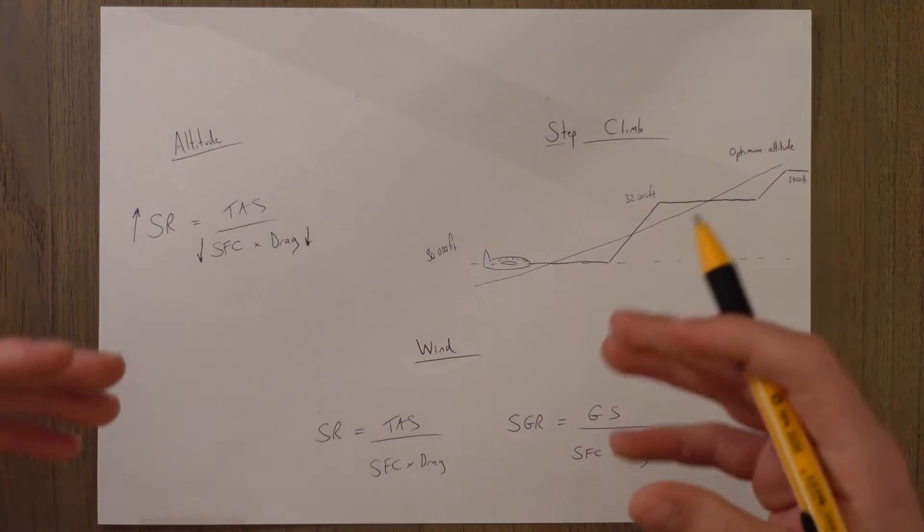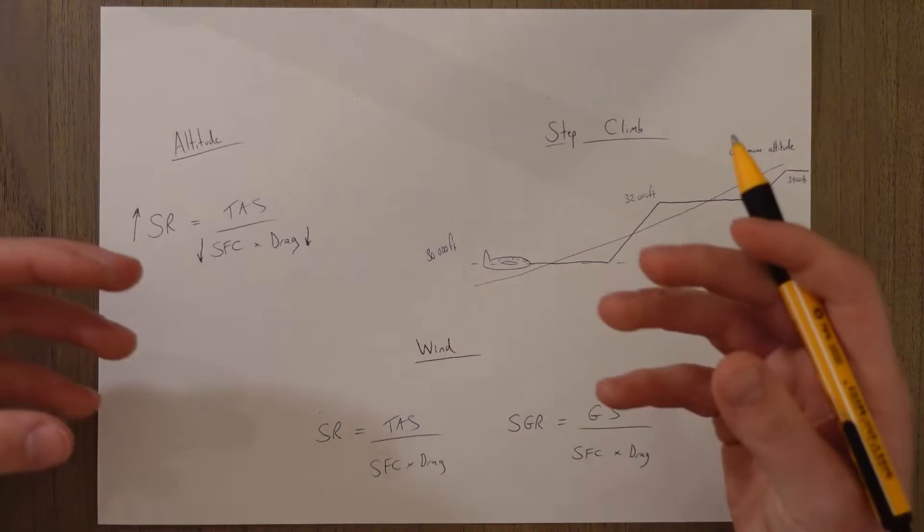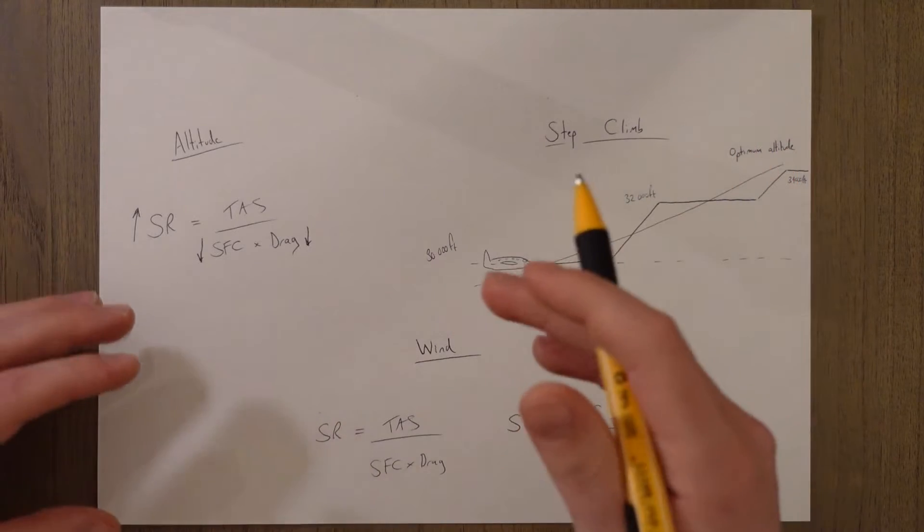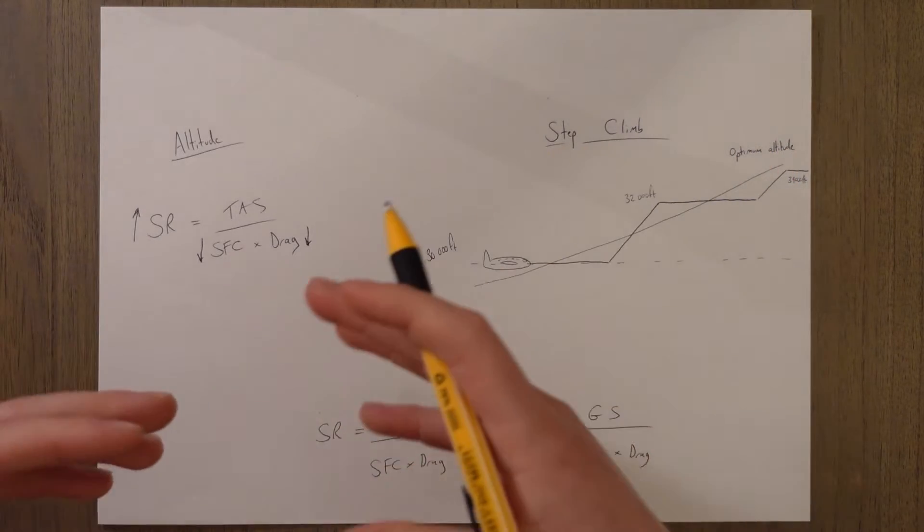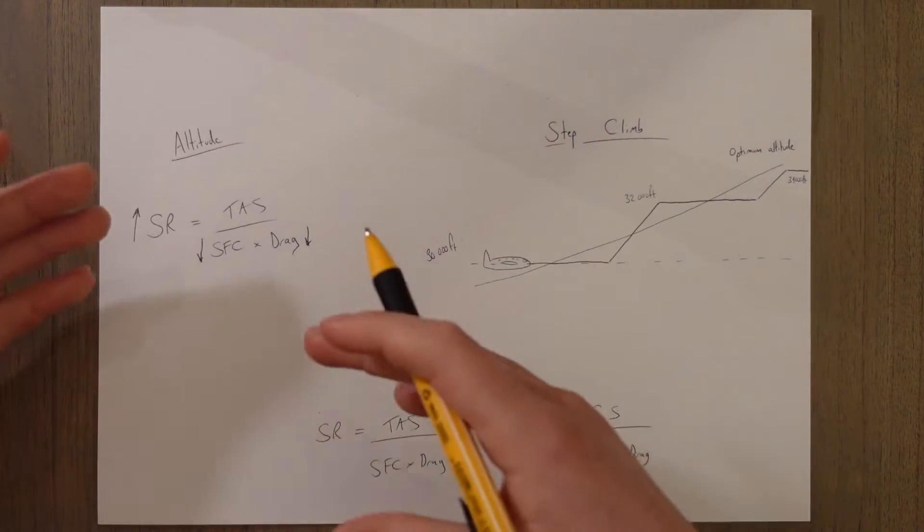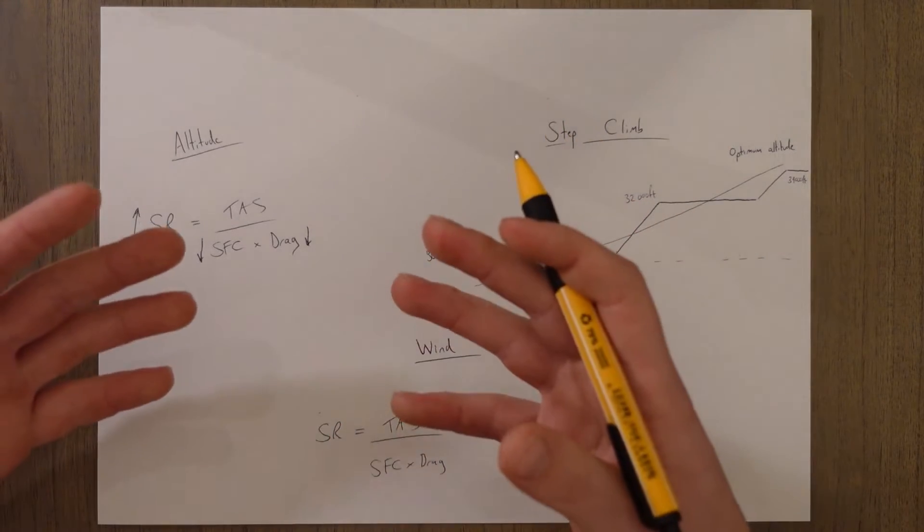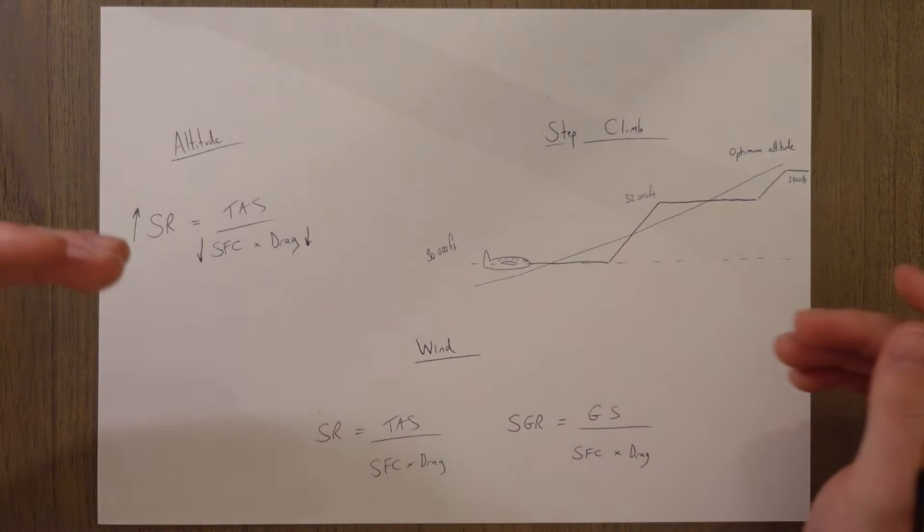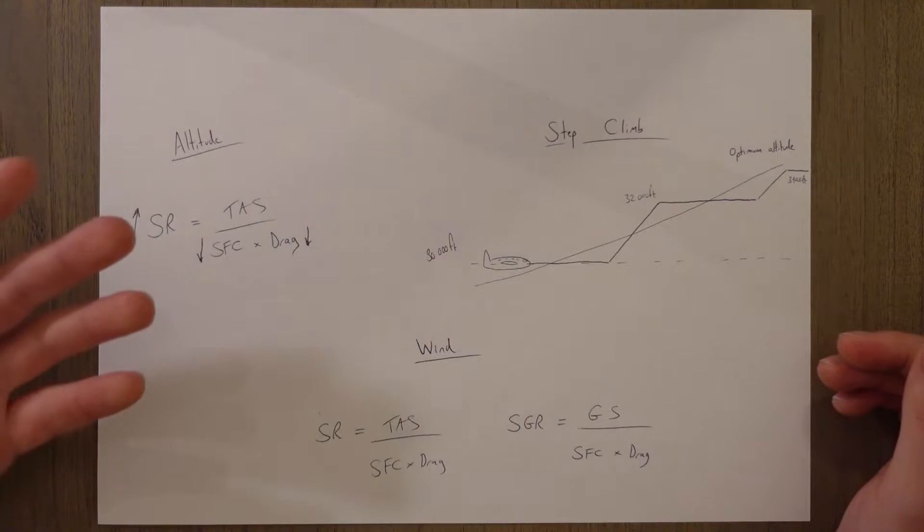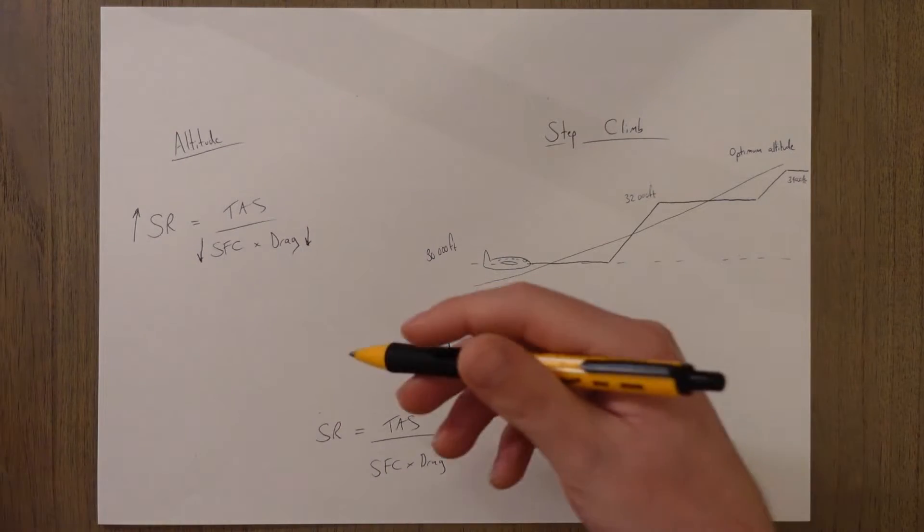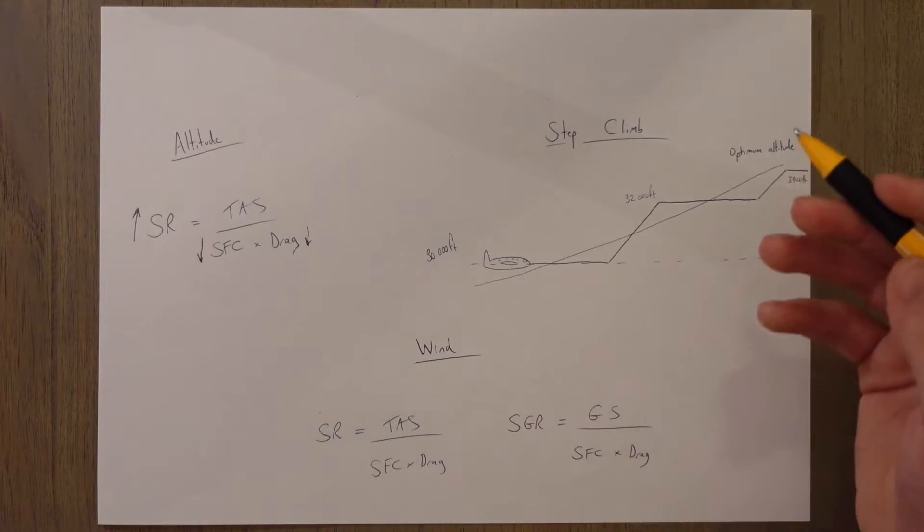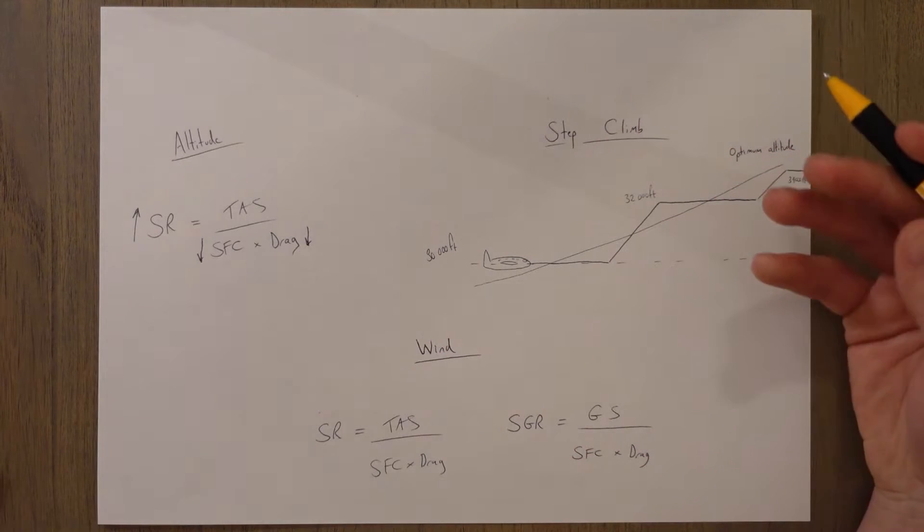In a propeller-driven aircraft, the optimum altitude isn't as simple, as it depends on throttle position and propeller RPM combinations. And optimum combinations and altitudes are often tested out and put in manufacturer's manuals. So it's hard to say, but it's not going to be quite as high up. It's going to be the position for basically maximum throttle open.